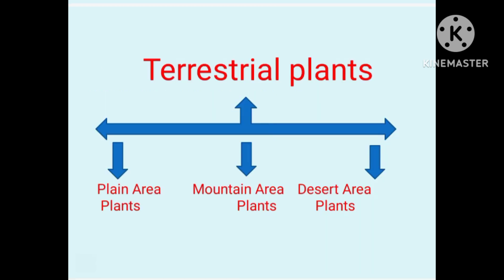Plants that grow on land are called terrestrial plants. We can see three types of terrestrial plants: plain area plants, mountain area plants, and desert area plants.